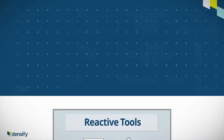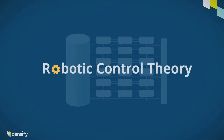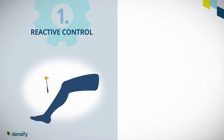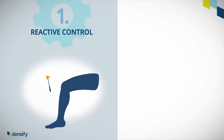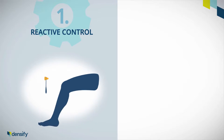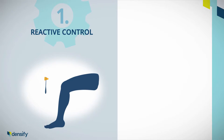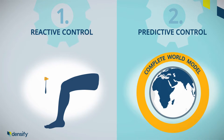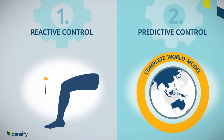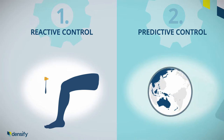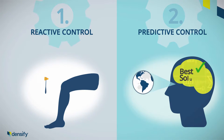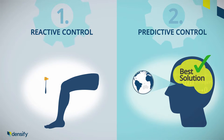An interesting parallel is found in robotic control theory, which defines two types of control. Reactive, where fast response is based on limited data input. And predictive, which is based on a much more complete world model that includes all the parameters required and a high level of intelligence to plan out the best solution in advance.